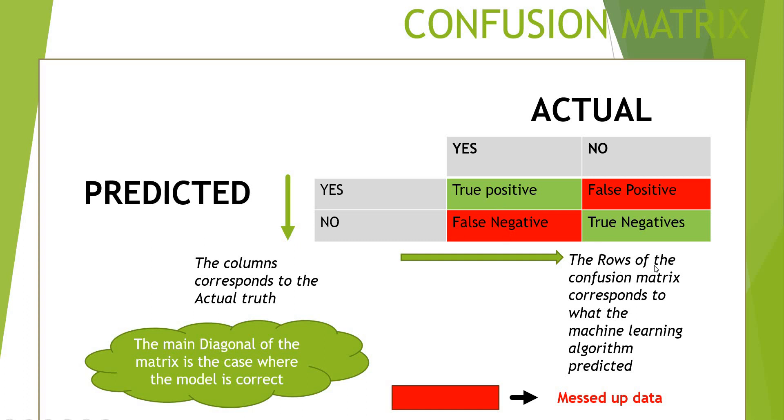The rows of the confusion matrix correspond to what the machine learning algorithm predicts and the columns correspond to the actual truth. The main diagonal of the matrix, the true positive and true negative, is the case where the model is correct, and the red box indicates the messed up data.